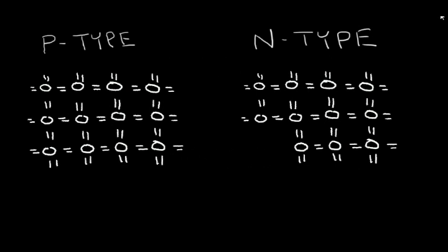Today, I want to explain the P-N junction. If you understand how the P-N junction works, you can understand how a diode works, how the bipolar transistor works, and how the MOSFET transistor works. Let's start by reviewing P-type and N-type silicon.